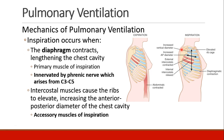Inspiration of air occurs when the diaphragm contracts. When it contracts, it pulls downward, lengthening the vertical dimension of the chest cavity. The diaphragm is the primary muscle of inspiration, and it's innervated by the phrenic nerve, which is C3 to C5.